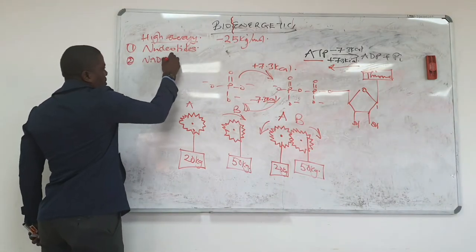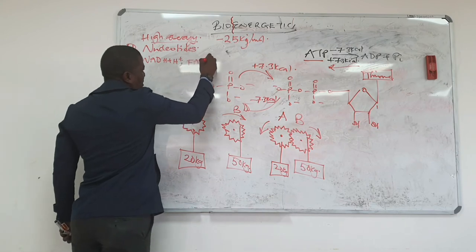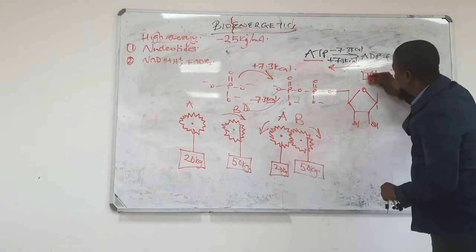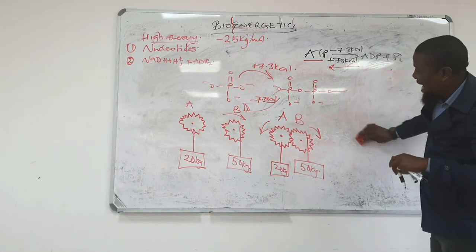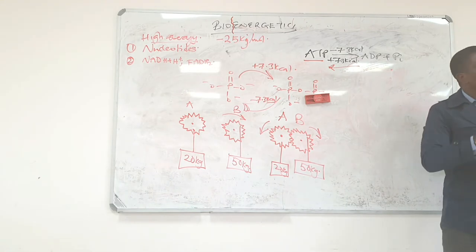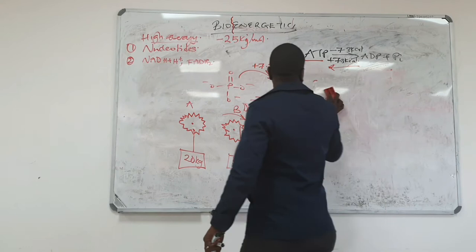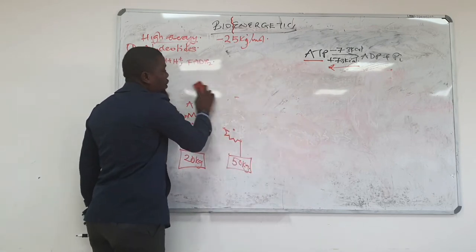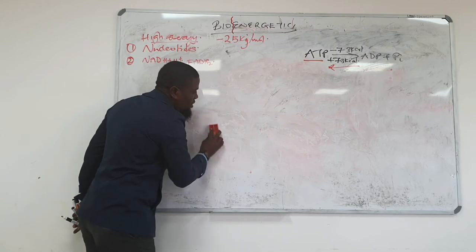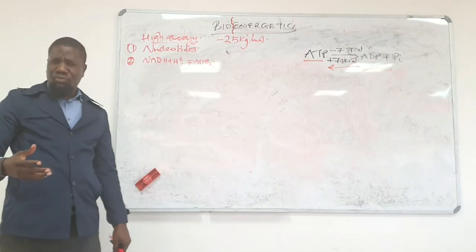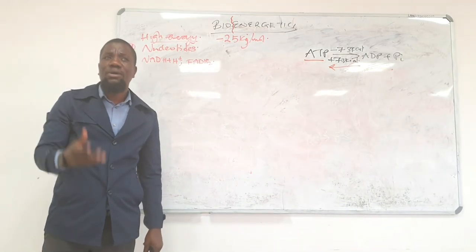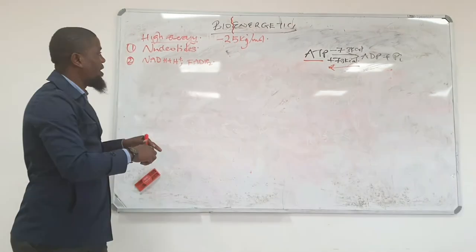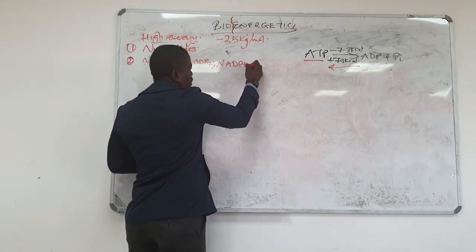He mentioned NADH plus H plus and FADH2. These have high energy also. Yes, they do because these molecules are highly reduced. Reduced molecules tend to have high energy. These molecules are reduced. When you go to the notes on fatty acid synthesis, you will see that in the synthesis of these molecules, they are actually synthesized by a process called reductive biosynthesis where the molecule is being sequentially reduced as it's being formed. So the source of the reducing equivalents is NADPH plus H plus.